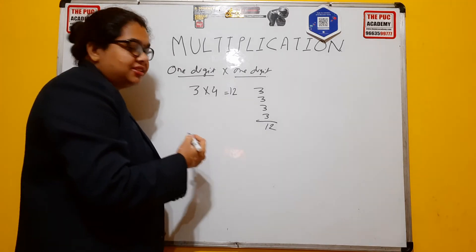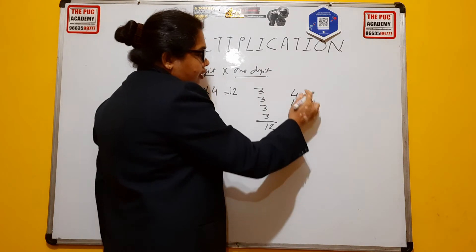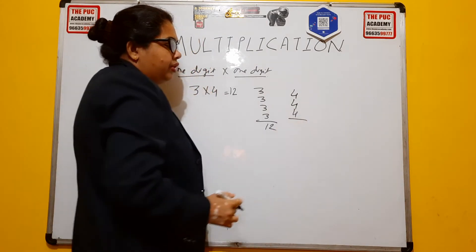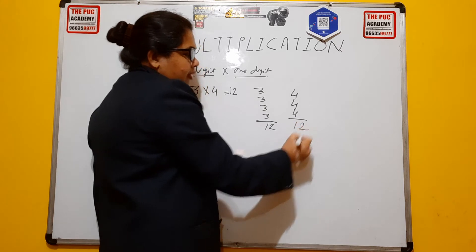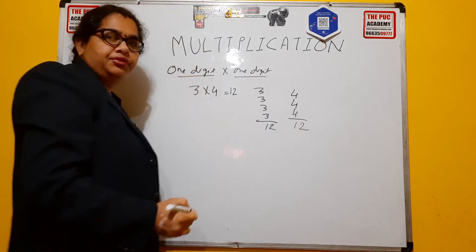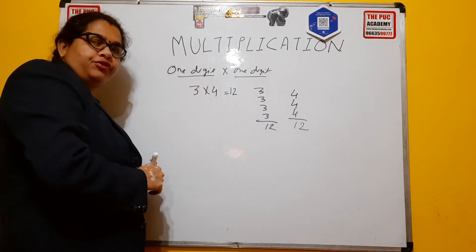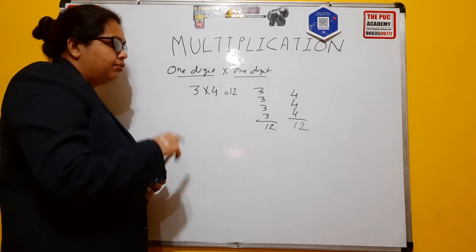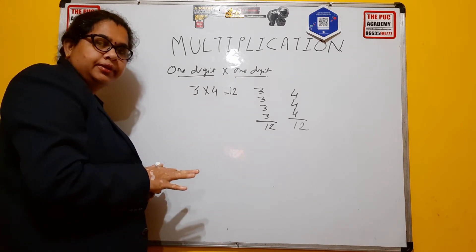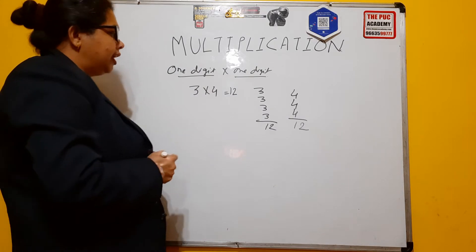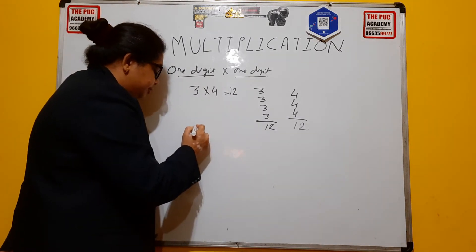As we have told you about two properties — we can also write 4 three times, which gives the same answer of 12. Do not confuse — it's very easy. So 3 into 4 equals 12, and 4 into 3 is also equal to 12.